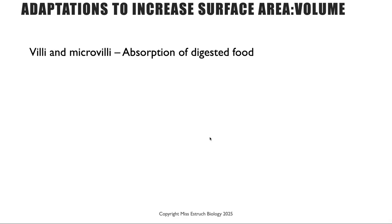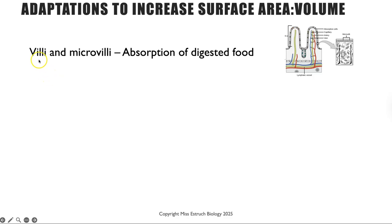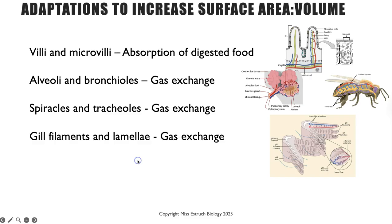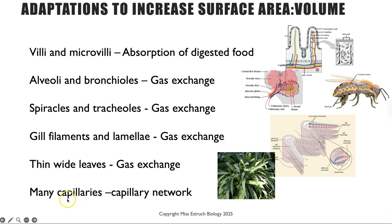Some of the ways that larger organisms have evolved to increase the surface area to volume ratio at these surfaces. Number one is villi and micro villi, and you find these for example in the ileum to increase the rate of absorption of digested food. The sheer number of alveoli and also the branching bronchioles are going to increase gas exchange. Spiracles and tracheoles, so that is in terrestrial insects, that is going to increase the rate of gas exchange. Gill filaments and lamellae in fish again for gas exchange. And then also for plants they've got very thin and wide leaves again to increase the surface area to volume ratio, this time for gas exchange as well.